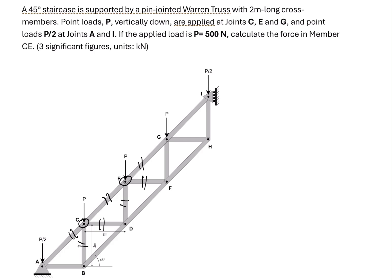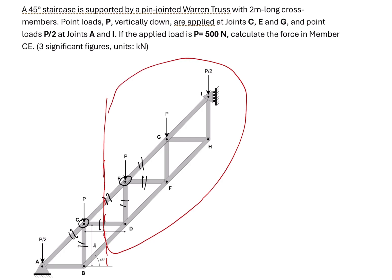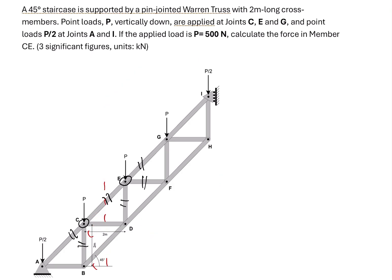The second method we can use is the method of sections. If we make a cut along members CE, CD, and BD, and then do analysis on that part of the truss, we only have three unknown member forces: FCE, FCD, and FBD. So the method of sections is easier.